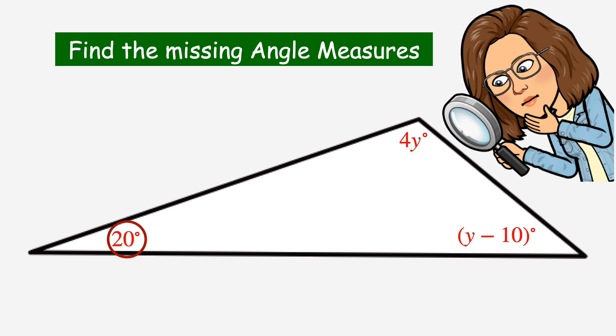Looking at this angle here on the left, you can see that it is 20 degrees. Moving up to the top angle, you see it is 4y degrees, and the third angle is y minus 10 degrees. So, our job here is to figure out the precise number of degrees 4y and y minus 10 actually are.